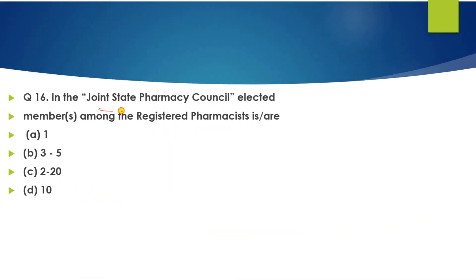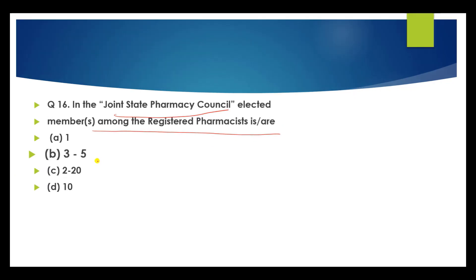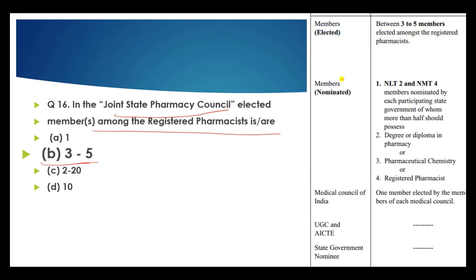Question number 16: In the joint state pharmacy council, how many members are elected among the registered pharmacists? The answer is three to five elected members in the joint state pharmacy council.